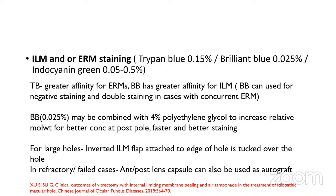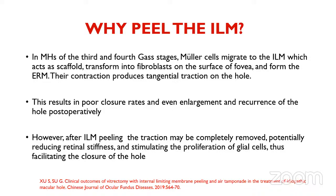For larger holes, the inverted ILM flap is placed over the edge of the hole and tucked into the hole. In refractory cases, autograft can be harvested in the form of a posterior lens capsule or a retinal autograft. ILM peeling is important because in stages 3 and 4, Müller cells migrate to the ILM, which acts as a scaffold transforming into a fibroblastic surface of the fovea, resulting in ERM formation. Their contraction produces tangential traction leading to poor closure rates and even enlargement or recurrence. ILM extraction removes this potential traction, reduces retinal stiffness, stimulates glial cell proliferation, and facilitates hole closure.